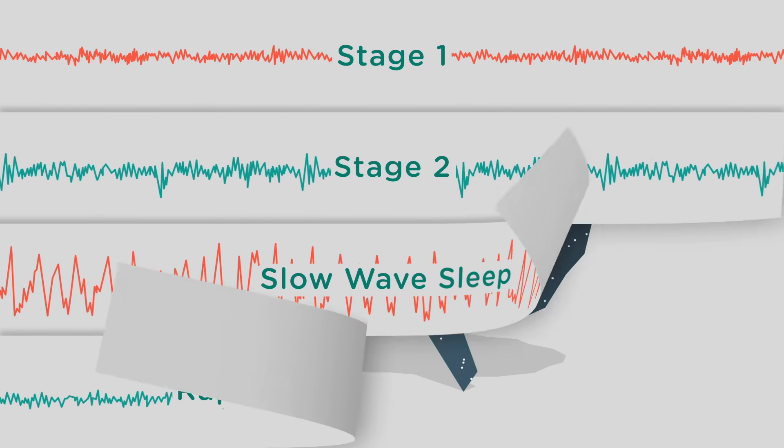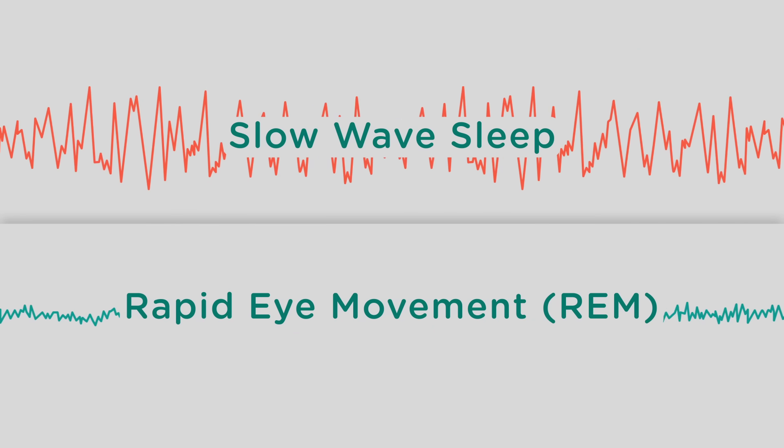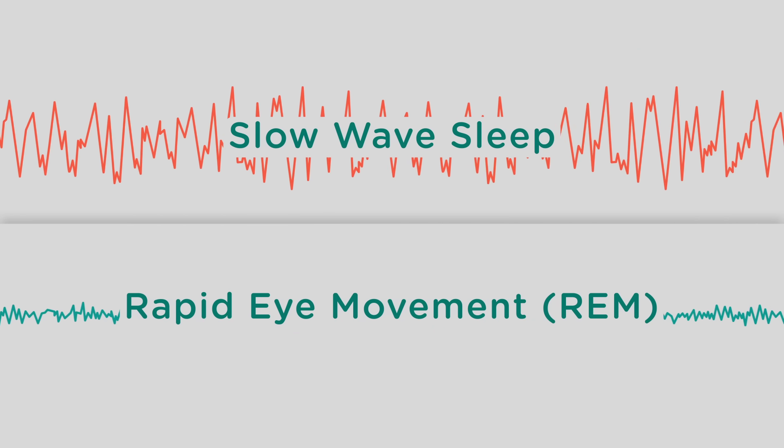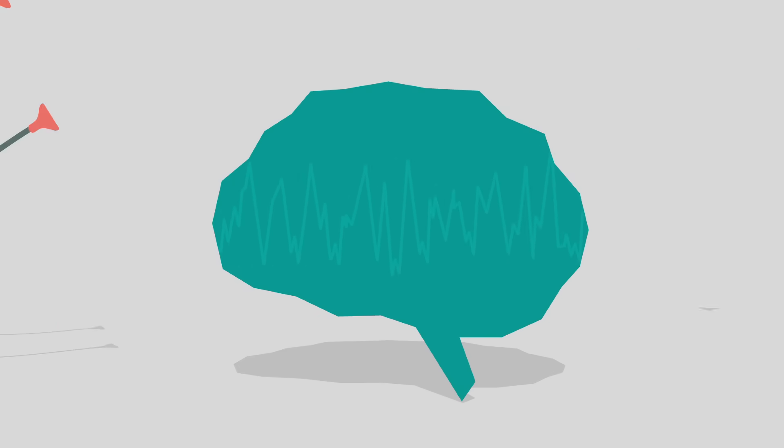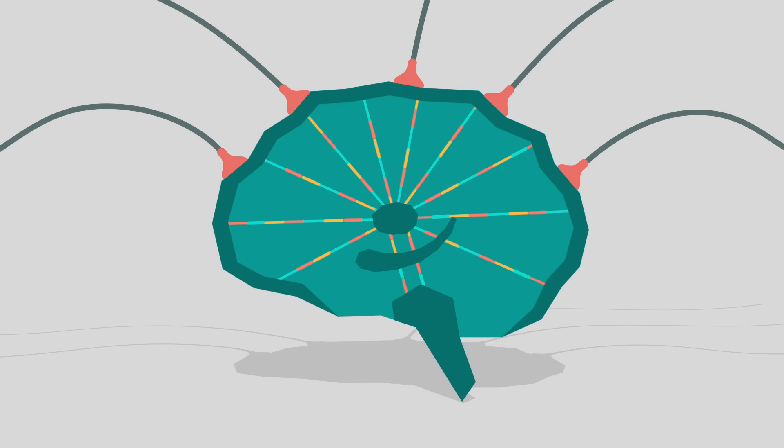Sleep is composed of four stages, the deepest of which are known as slow-wave sleep and rapid eye movement. EEG machines monitoring people during these stages have shown electrical impulses moving between the brainstem, hippocampus, thalamus, and cortex, which serve as relay stations of memory formation.